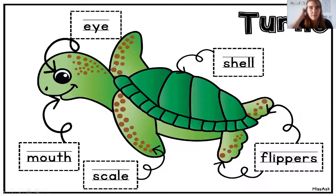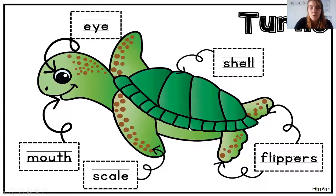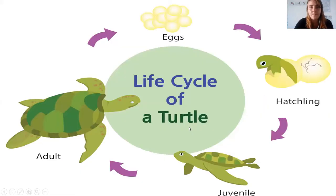This is his eye, this is his mouth, and all over his body he has scales. This is his shell, and these are his flippers that he uses to swim.